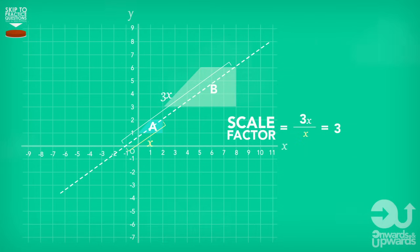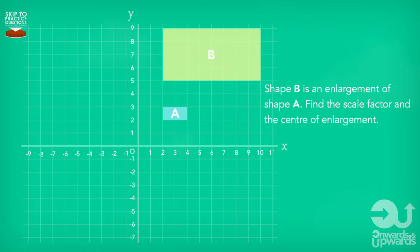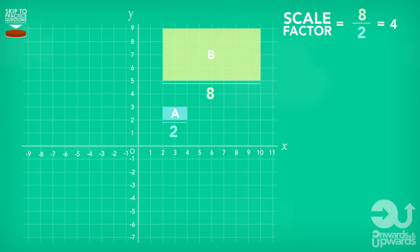So, an example of another type of question we could have is B is an enlargement of shape A. Find the scale factor and the centre of enlargement. First, we're going to find the scale factor. I'm choosing this length from the enlarged shape and I'm going to divide it by its corresponding side on the original shape. So, in this case, I would have eight divided by two and this gives me four. I need to make a note of this and remember it.